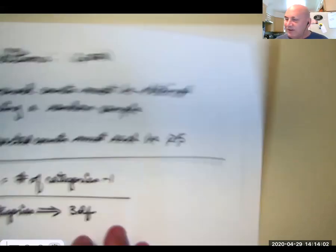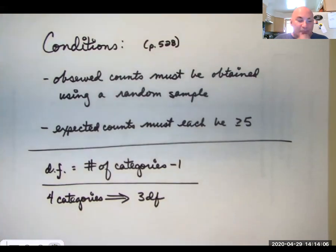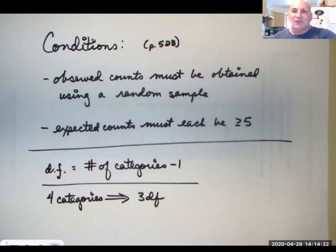So if we look at some conditions that have to be met on our current textbook, they're on page 525. Your observed counts have to be obtained by a simple, by a random sample. And expected counts all must be at least 5. If they're not at least 5, then your sample size isn't big enough. And in a goodness of fit test, your degrees of freedom is your number of categories minus 1.